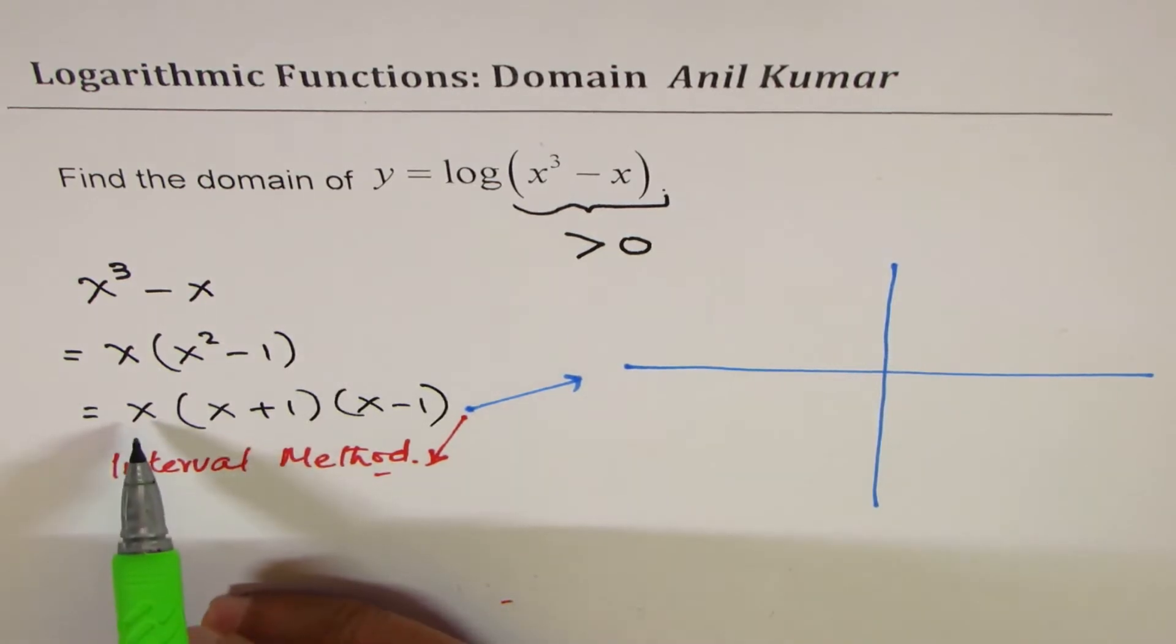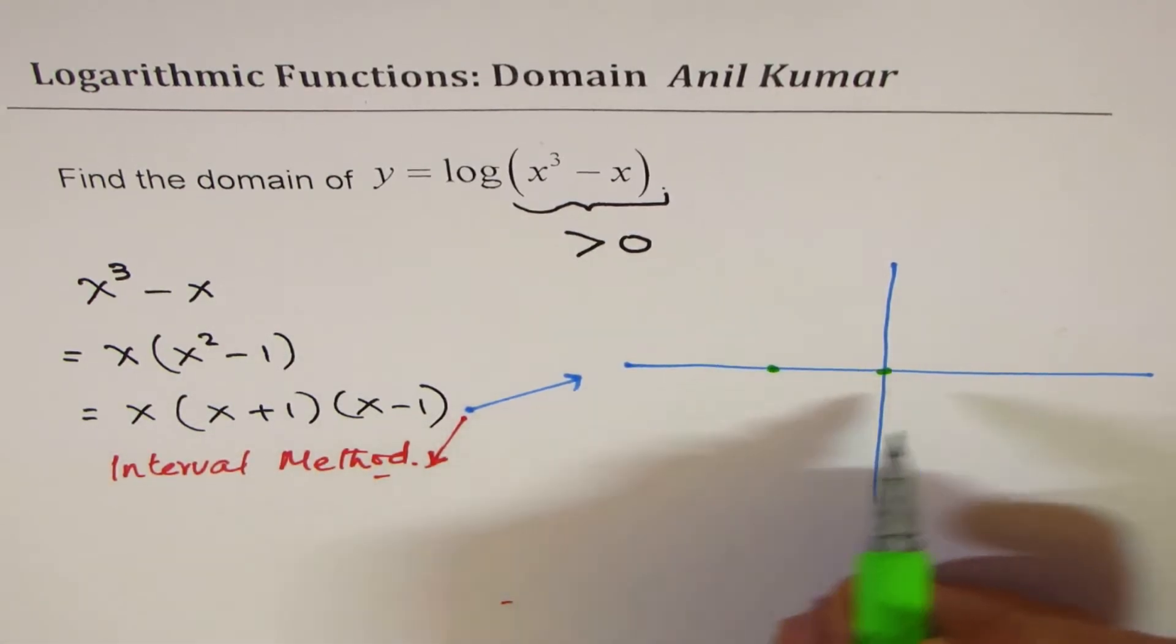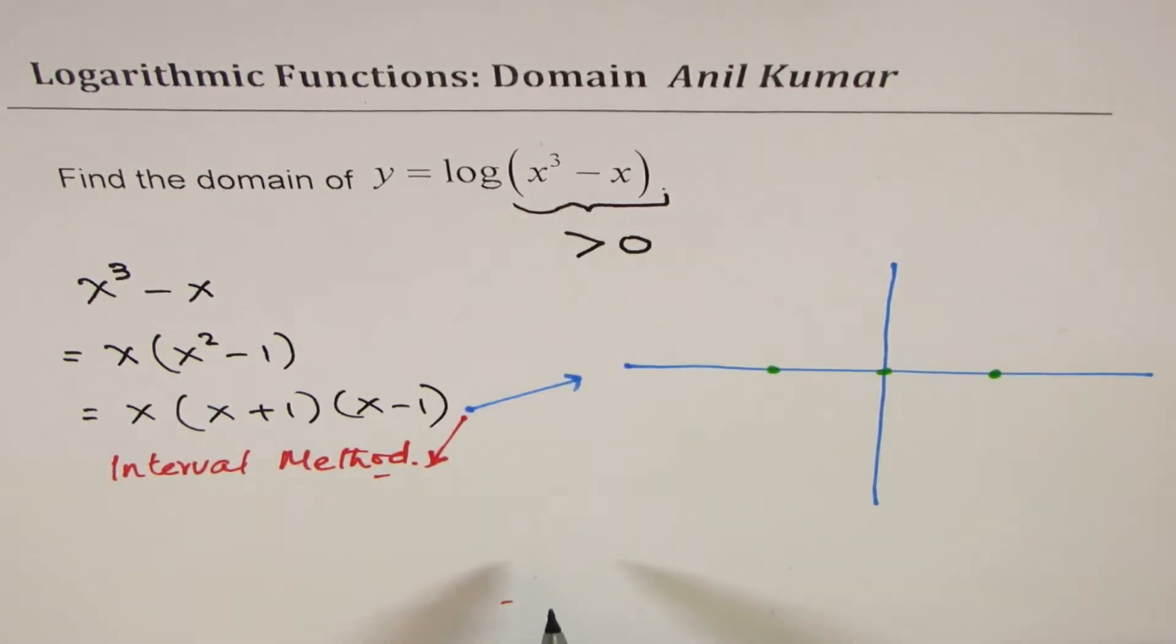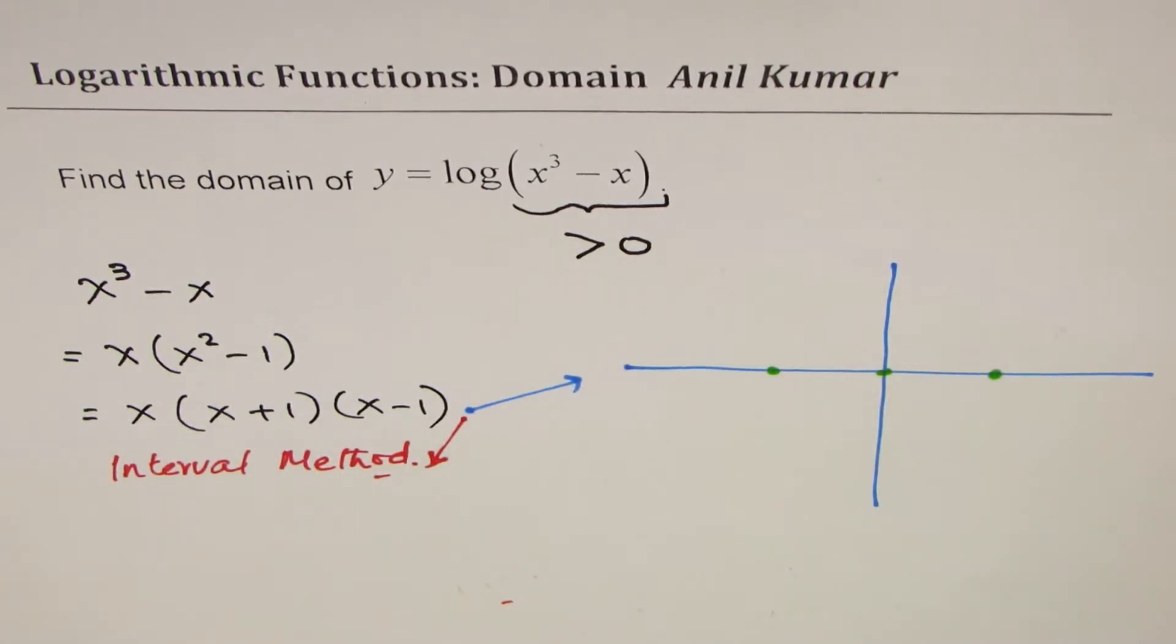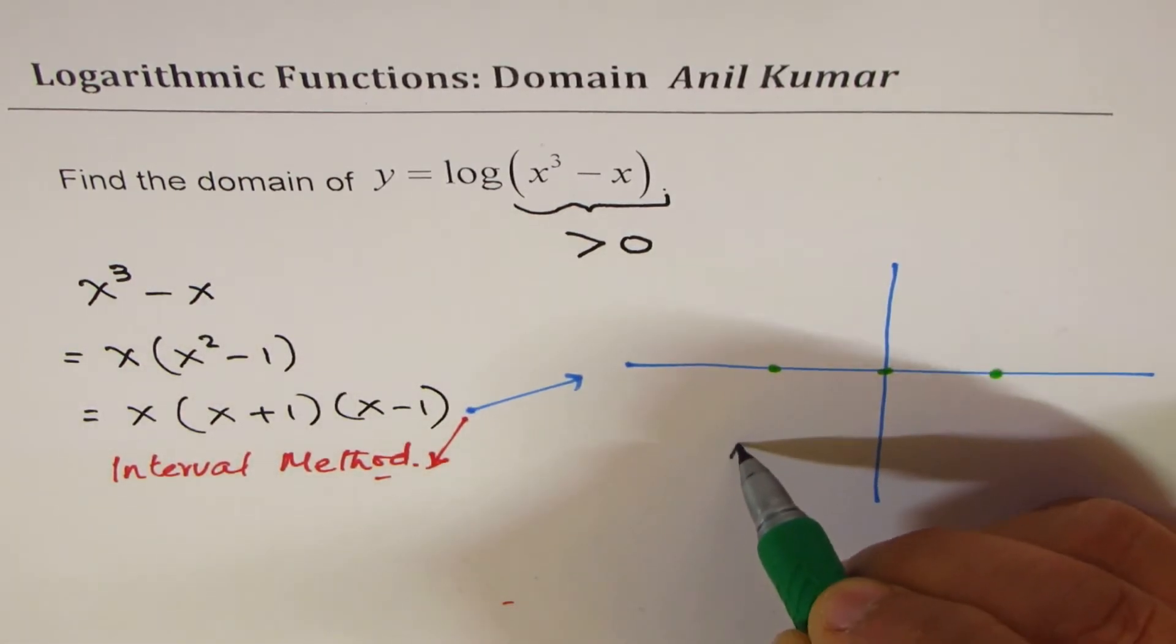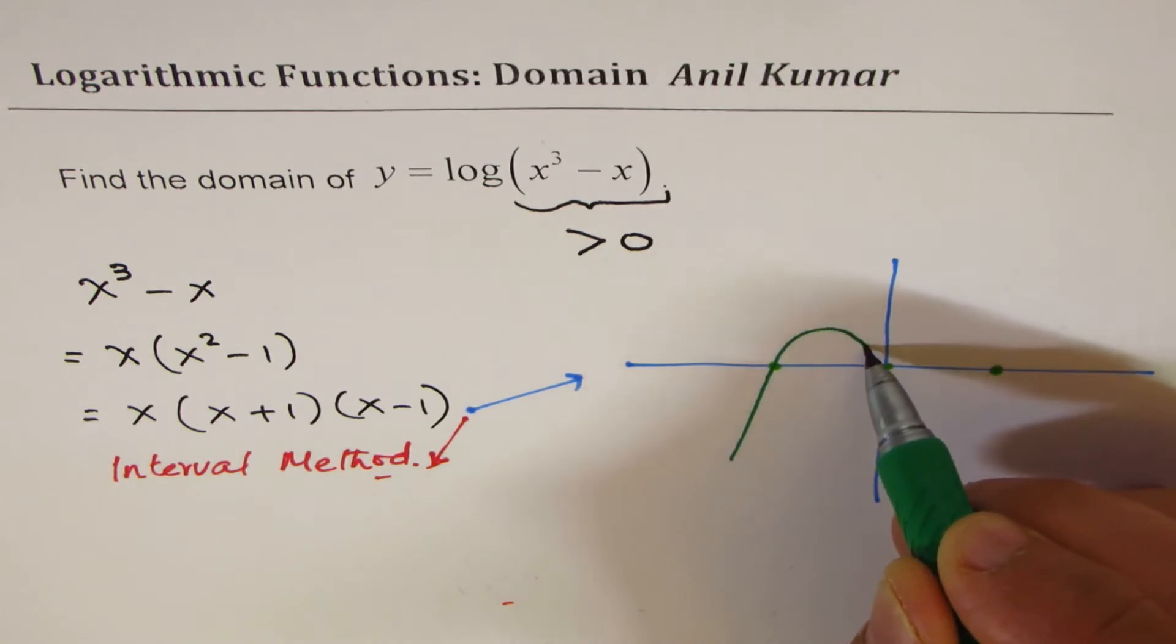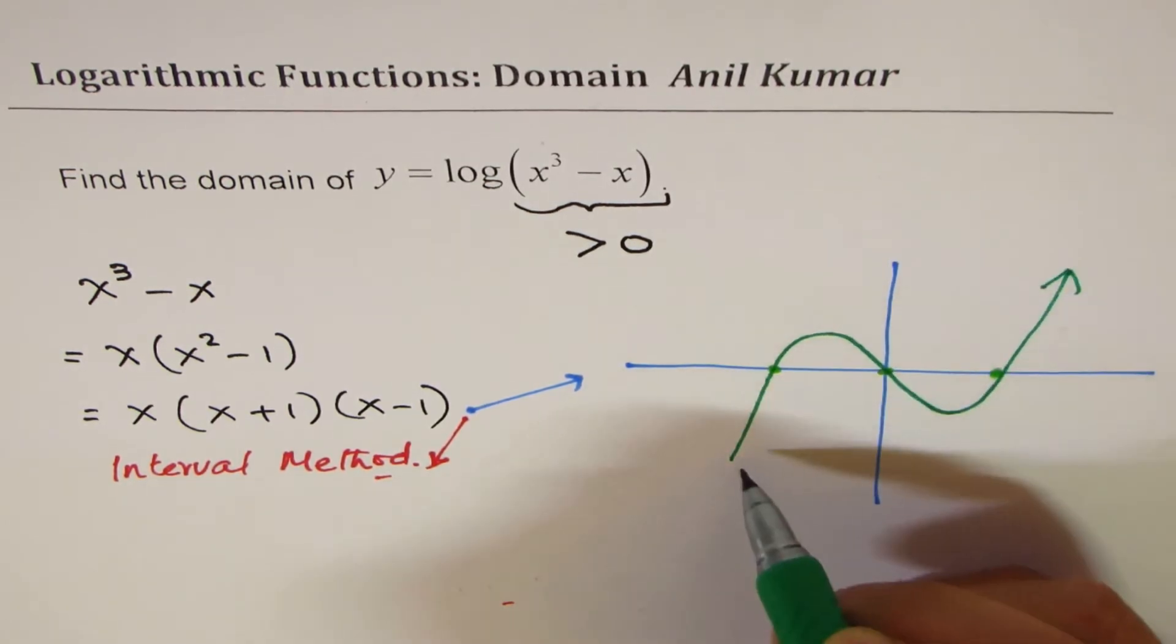We have a polynomial with three zeros. The zeros are at x = 0, x = -1, and x = 1. Since the leading coefficient is positive, right side is up. And therefore, we can actually sketch this function. It's a cubic function.